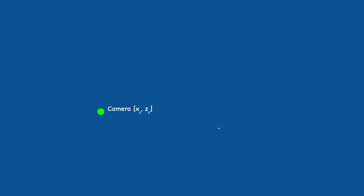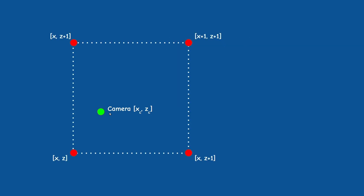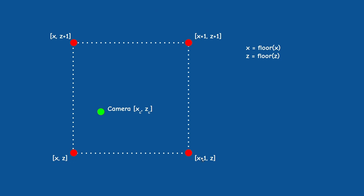We start with the camera positioned at Xc and Zc, and these coordinates are probably fractions. For simplicity let's assume the world scale is 1. What we need to do is find the four neighboring cells in the height map of the quad where the camera is located. We just need to truncate the fractional part of the coordinates using the floor function. This gives us the bottom left corner of the quad, and the other corners can be calculated by adding 1 to the respective axes. Now that we know the coordinates of the corners of the quad we can get the height at each corner.